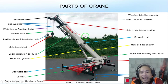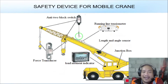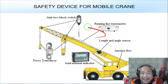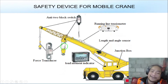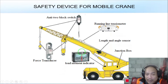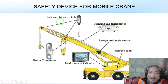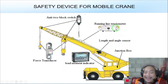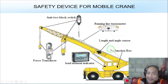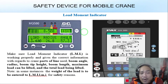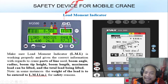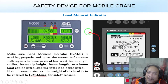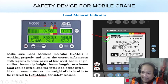These are the parts of your crane. Next are the safety devices for mobile cranes. First, the force transducer — this will alarm if you over-pull. The hook block will hit it if you over-pull and it will alarm. Next, the load moment indicator located inside the cabin, the anti-two-block switch, running line tensioner, length and angle sensor, and the junction box. The load moment indicator shows actual data — if you retract your boom it will appear here.